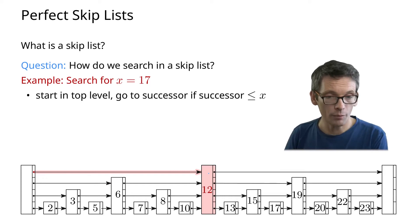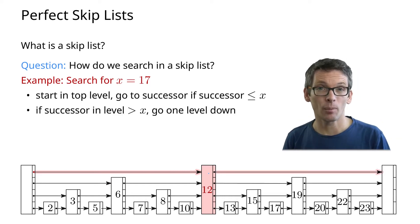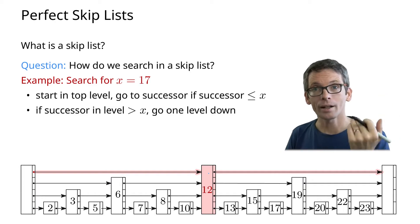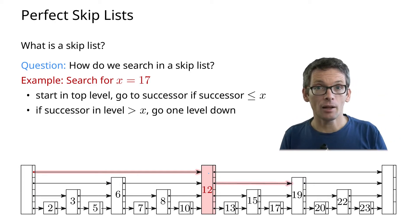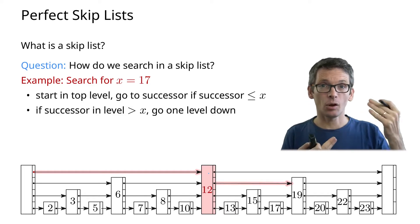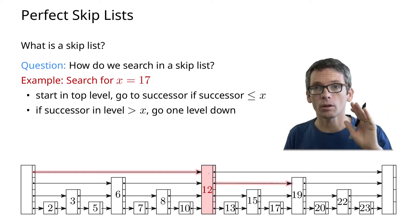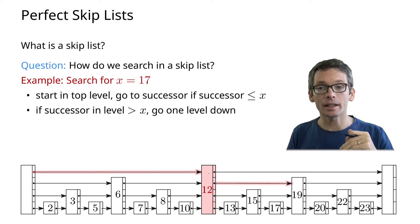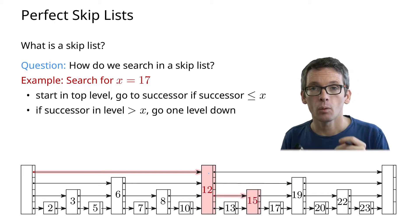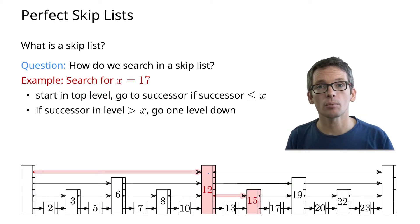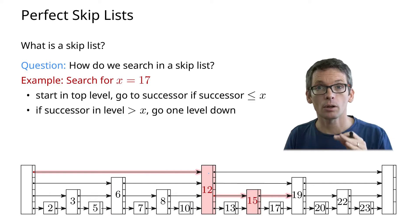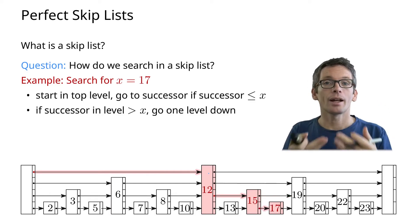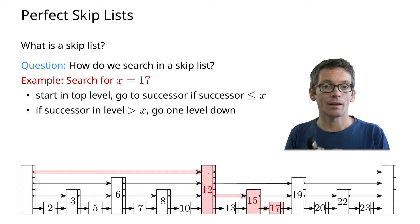Now if we would do another step at the top level then we would go past the 17, so we go one level down. We try the next element — that is a 19 — again it's going too far, so we're not going to go to the 19 but instead one level down. In that level we have the 15, which is smaller than or equal to 17, so we go there. Then the next step would be to the 19, so again we go one level down, and there indeed we find the 17.